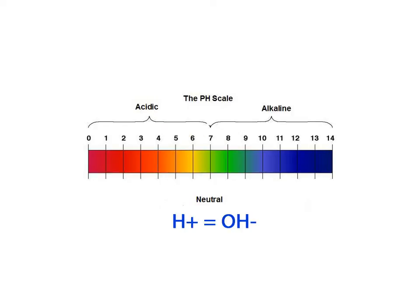Neutral means that the number of hydrogen ions is equal to the number of hydroxide ions. Think mathematically. If I add plus 5 to negative 5, I get zero.